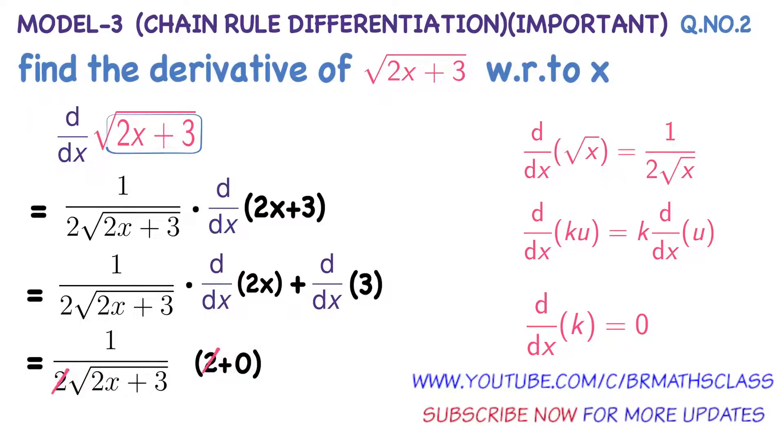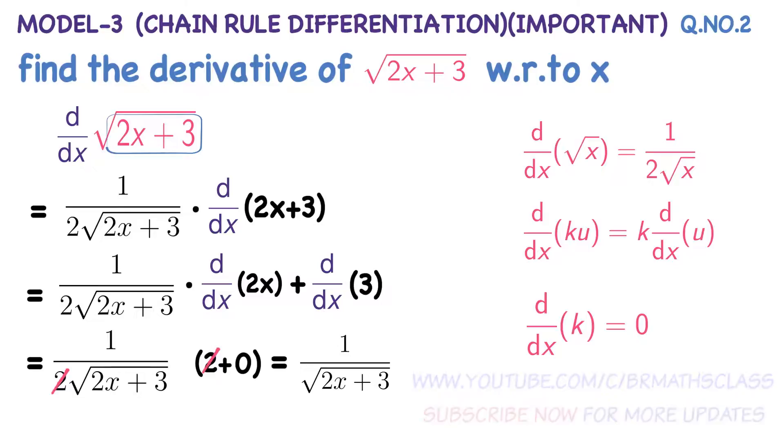So in the numerator 2 and the denominator 2 will get cancelled. So the remaining is 1 divided by square root of 2x plus 3. Therefore, derivative of square root of 2x plus 3 is 1 divided by square root of 2x plus 3.